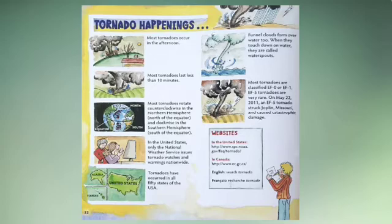Most tornadoes are classified EF0 or EF1. EF5 tornadoes are very rare. On May 22, 2011, an EF5 tornado struck Joplin, Missouri, and caused catastrophic damage.